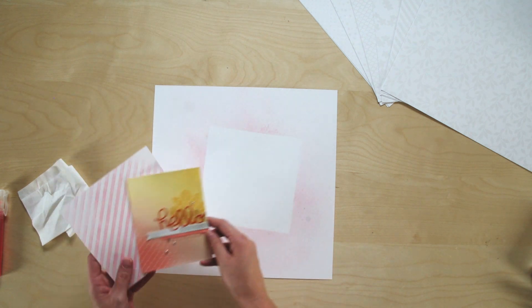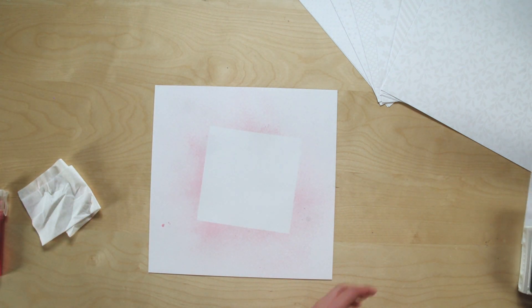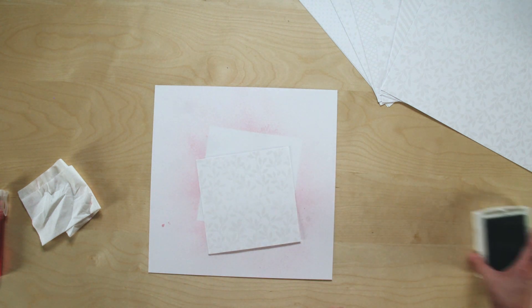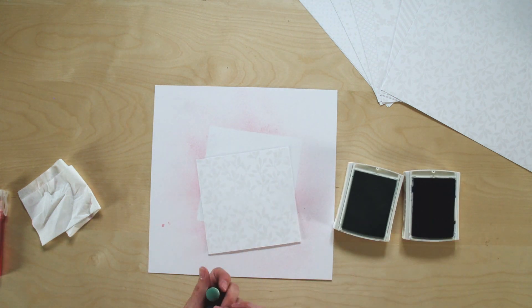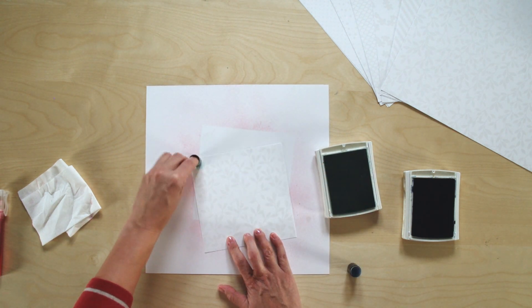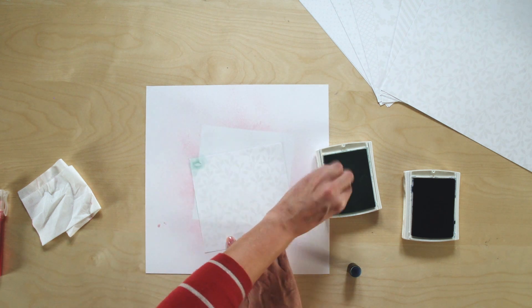Now another fun way to add those gradations of color is by using daubers or sponges, and you can add those to your project just like you do anything. Just take your sponge dauber and dip it into your ink, and then you can either daub it on the top like that or rub in depending on what type of look you want.